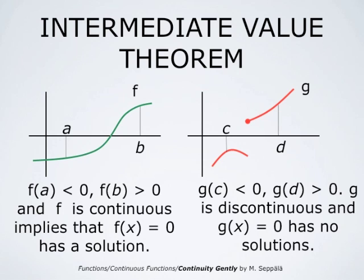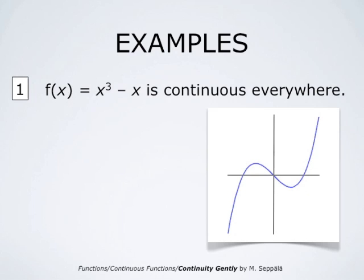The red graph is the graph of a function g which is not continuous on the interval from c to d, because it is discontinuous at one point in the interval. The function g takes a negative value at c and a positive value at d, but since g is discontinuous, we may not conclude that the equation g(x) equals 0 has solutions. In fact, in this case it has no solutions.